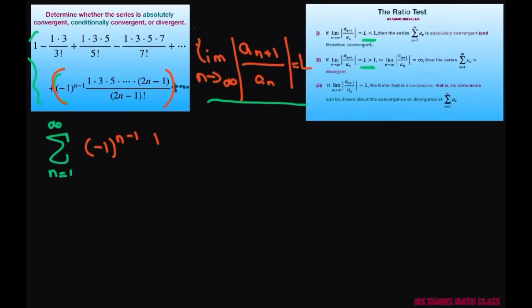And we're going to have 1 times 3 times 5 times dot dot dot times 2n minus 1 divided by 2n minus 1 factorial.